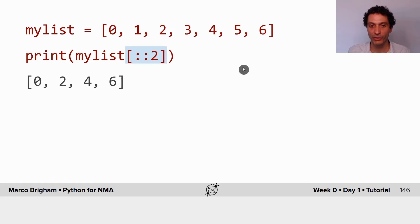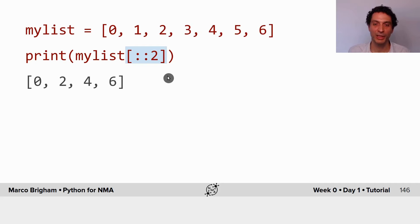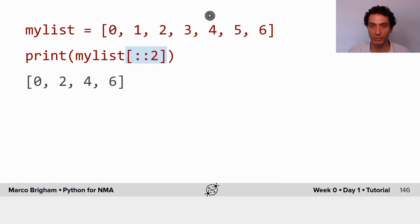You can also use the double colon notation to specify elements of your list with a step. So you start at element zero, step two, step two, step two — double colon followed by the step value.